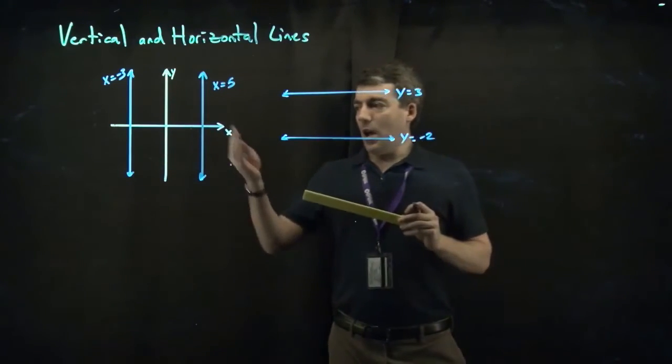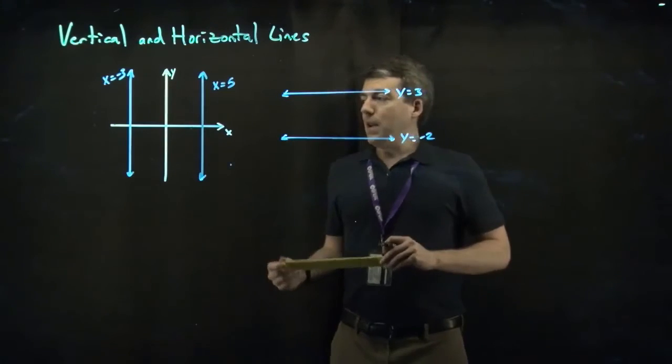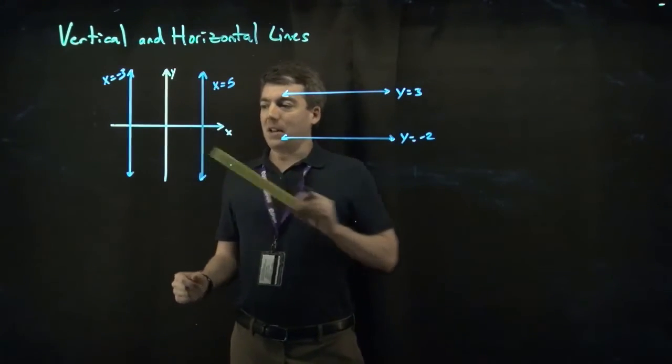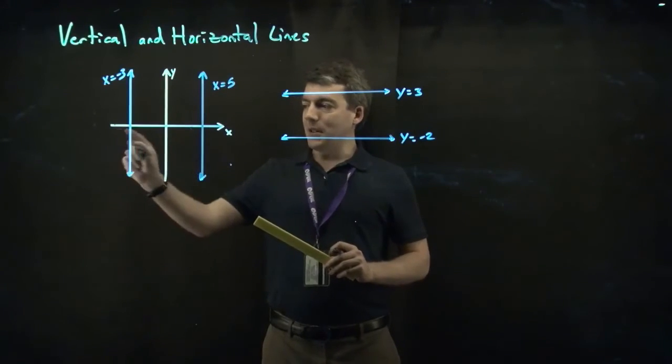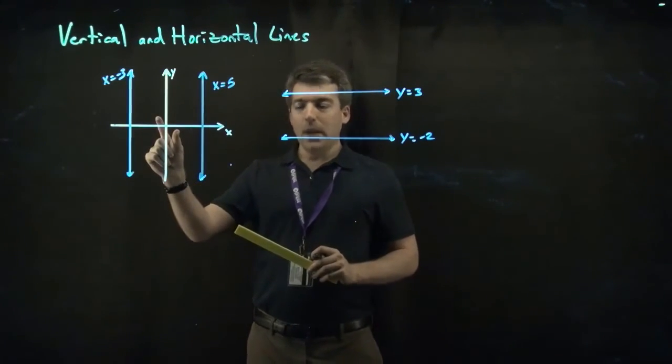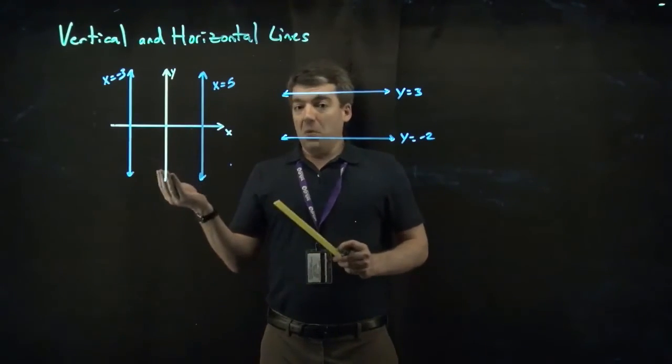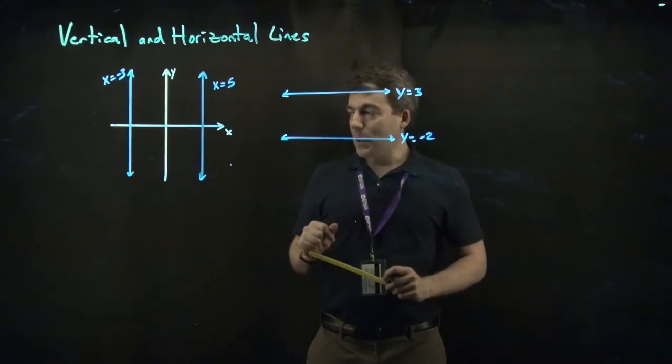All right, the question is then, what would be perpendicular to a vertical line? Well, if the axis gives us any ideas, the vertical axis, the y-axis, and the horizontal axis are perpendicular to each other. The vertical axis is a vertical line, and the horizontal axis is a horizontal line.